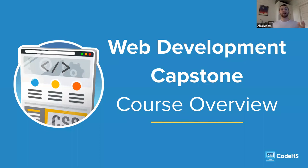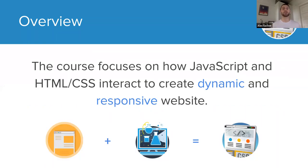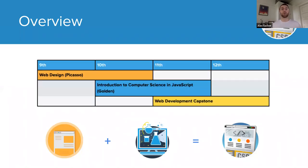The web development capstone is a full year-long course designed for high school students. The course focuses primarily on how students can use JavaScript in tandem with HTML and CSS to create dynamic and responsive websites. The course is intended to be the third in a web development pathway that builds off students' former knowledge of JavaScript, HTML, and CSS learned in other CodeHS courses.